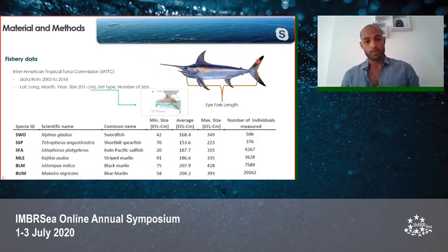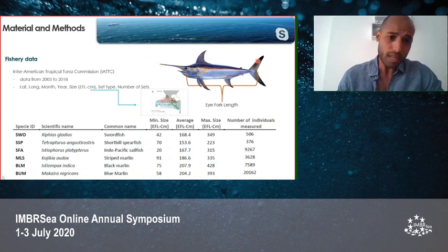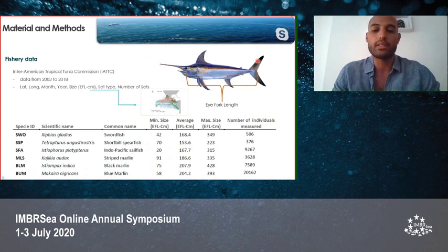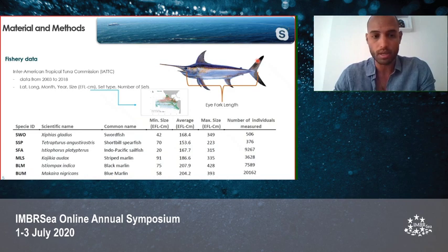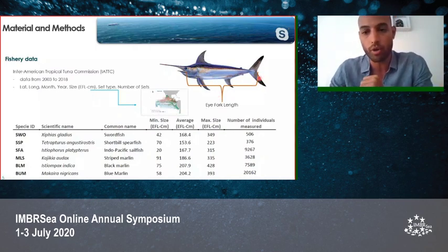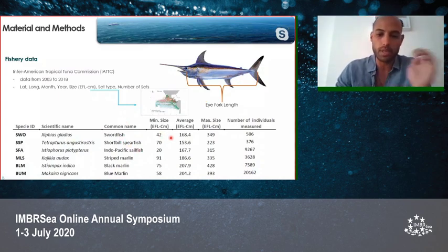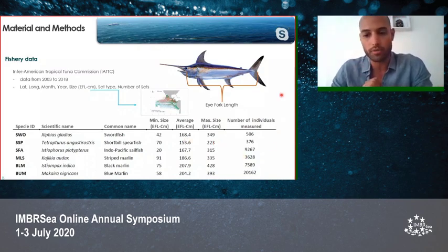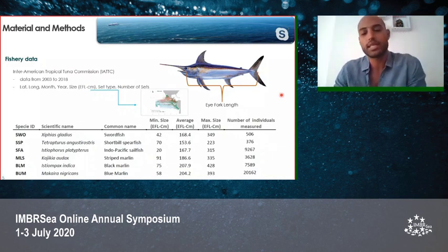We gathered fishery data from the Inter-American Tropical Tuna Commission (IATTC), with monthly information from 2003 to 2018. The dataset includes latitude and longitude of the catch, date, size and species of each fish — with size measured in eye-fork length, a standard measurement from the eye to the fork of the caudal fin — as well as set type and number of sets.